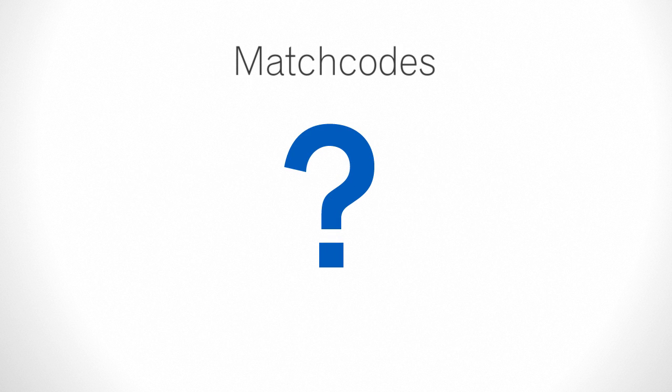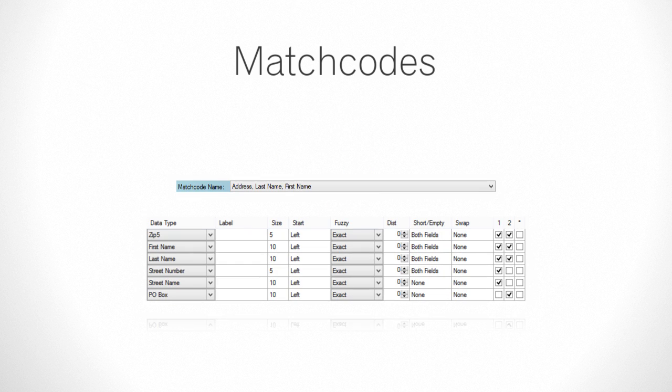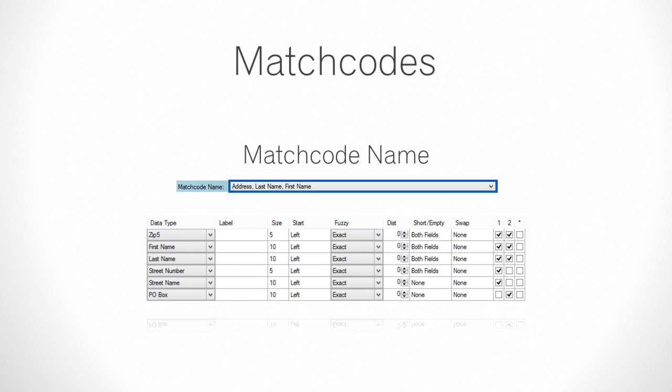So what's in a match code? Now we'll go over a quick review of the pieces of a match code. First we have the Match Code Name. This is a unique name which identifies that match code. The name should usually give a general description as to how it'll match records or describe a particular job process.